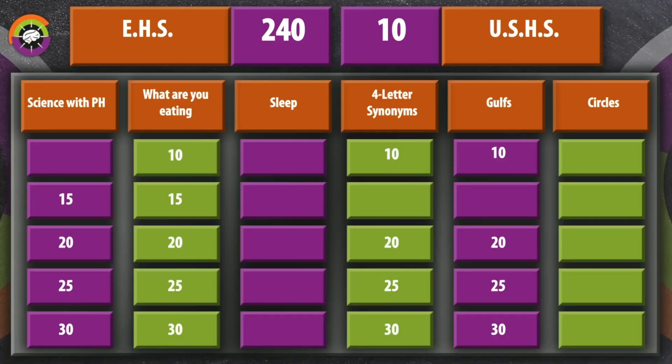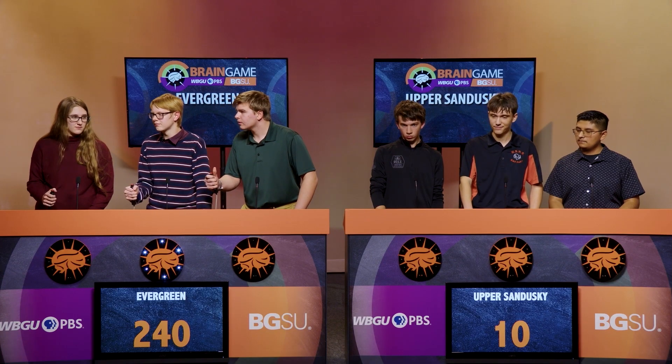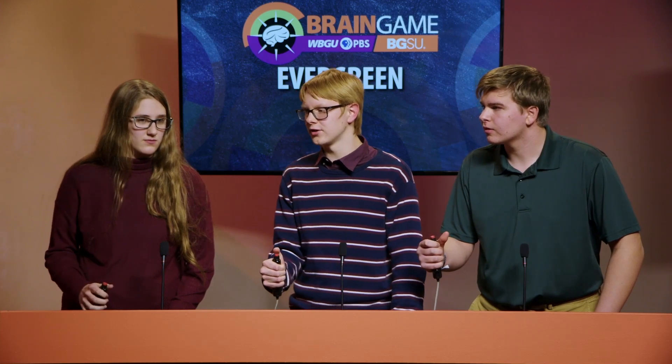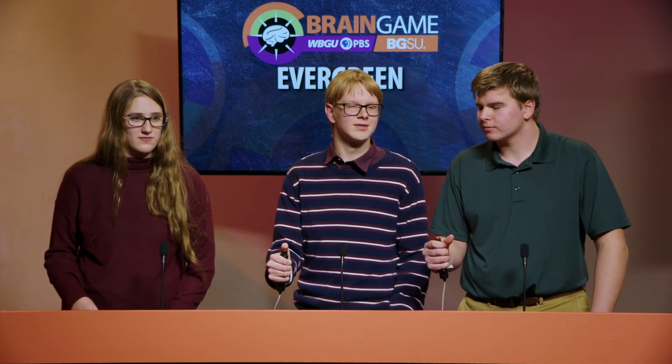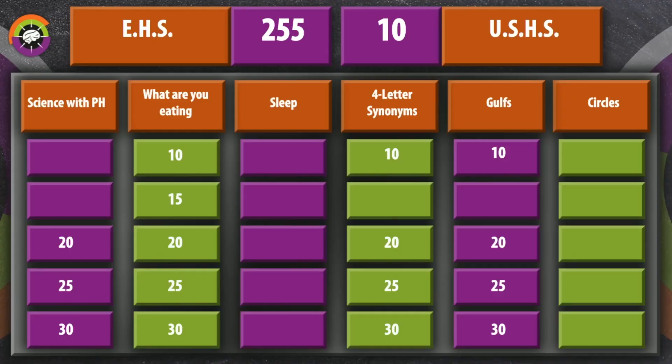Evergreen in control. Science for 15 points — what highly reactive chemical element has the chemical symbol P? Evergreen buzzes in — Caleb answers 'phosphorus,' which is correct. Evergreen in control.